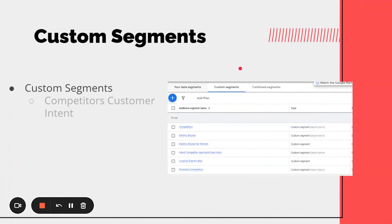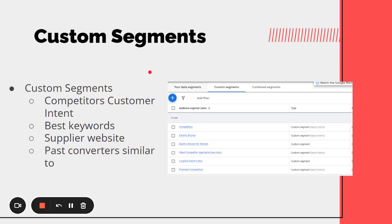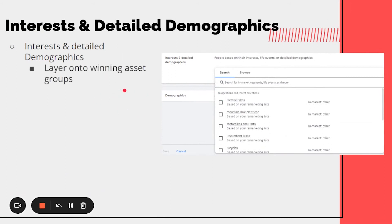Custom segments are signals you give Google based on what people have searched in the past or websites and apps they've visited — almost like a custom interest or affinity. You can type in your competitors' keywords, their websites, and people who visited similar sites to get more targeted users. The best keywords that have converted in your account can be used as signals. If you have a supplier, you can put in their website. You can also do lookalike audiences with custom segments, and use your brand keywords to find more people similar to your current brand searchers. I'd start with first-party data and custom segments first — those tend to work best.